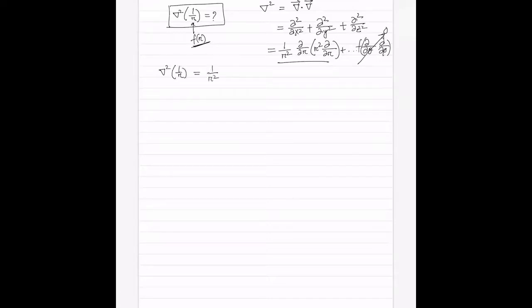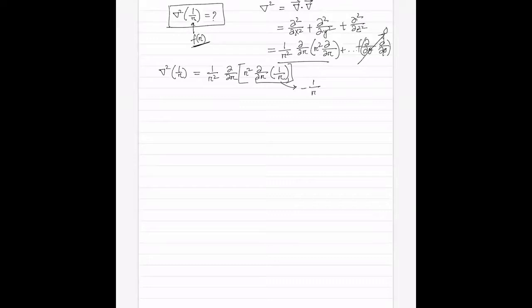So we apply the Laplacian: (1/r²)(∂/∂r) of r²(∂/∂r)(1/r). The derivative of 1/r is −1/r², so after multiplying we get (1/r²)(∂/∂r)(−1), which is zero. So it appears the Laplacian of 1/r equals zero.